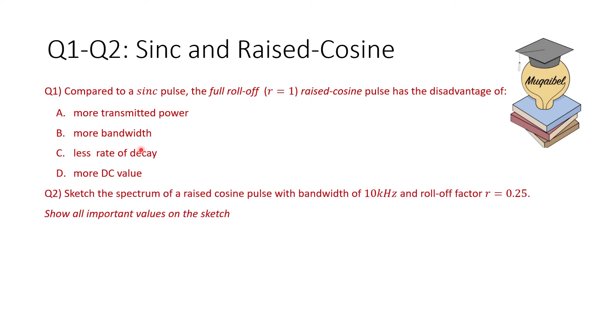Question number two: sketch the spectrum of a raised cosine pulse with bandwidth of 10 kHz and roll-off factor of R equal to 0.25. Show all important values on the sketch. Now you can pause the video. Take your time to sketch the spectrum of raised cosine. Show all the important values.